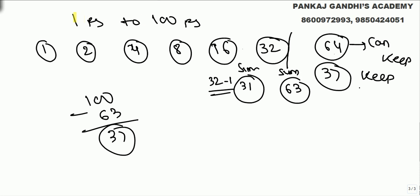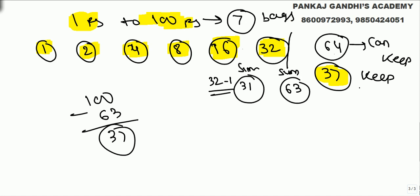So if we have only 100 rupees total and need to cover 1 to 100: first bag 1, second bag 2, third bag 4, fourth bag 8, fifth bag 16, sixth bag 32. Up till now summation is 63. So in next bag, out of 100, 63 is gone — remaining is 37, so next bag we keep 37 rupees; total becomes 100. How many bags? 1, 2, 3, 4, 5, 6, 7 bags. We needed 7 bags.